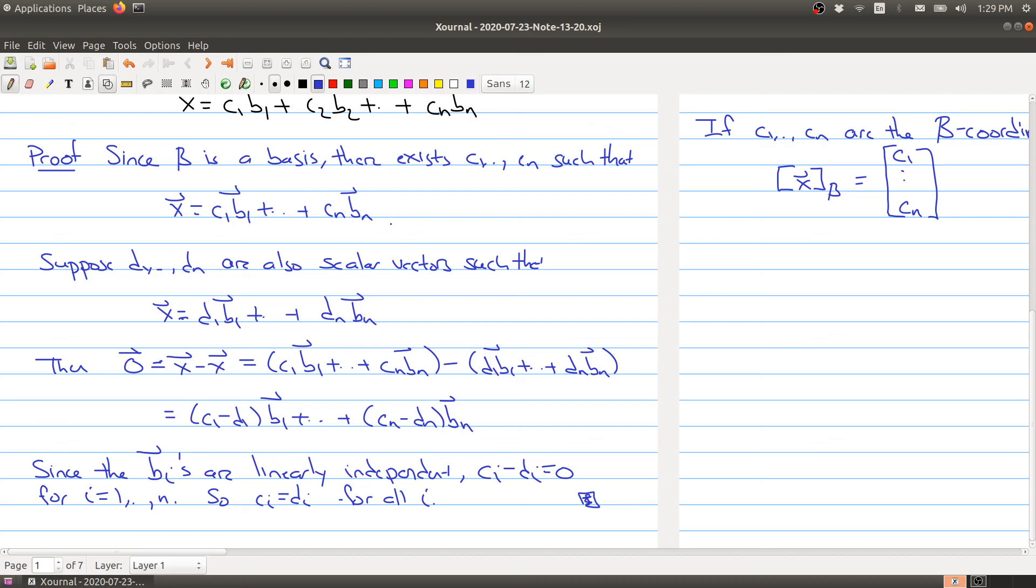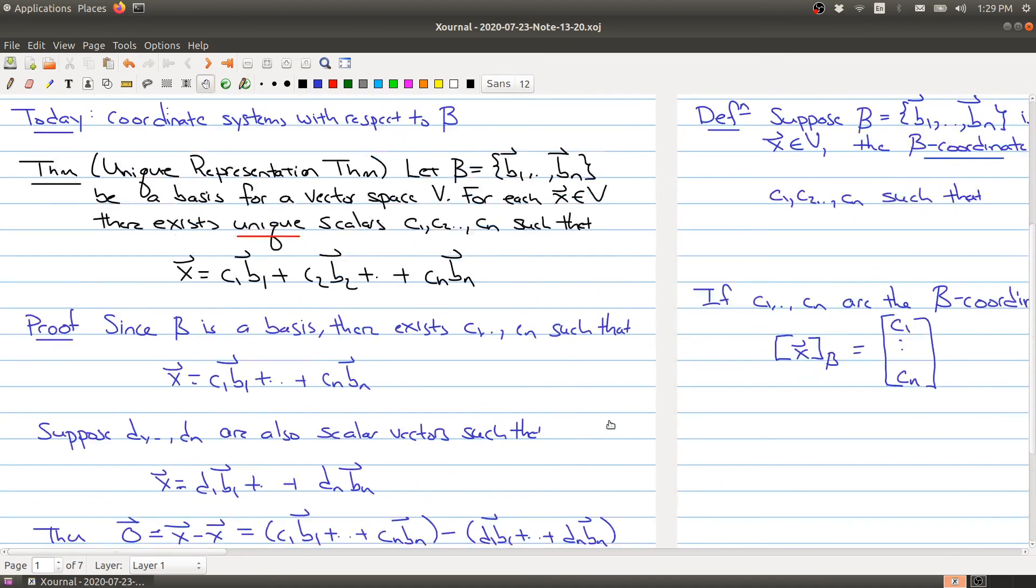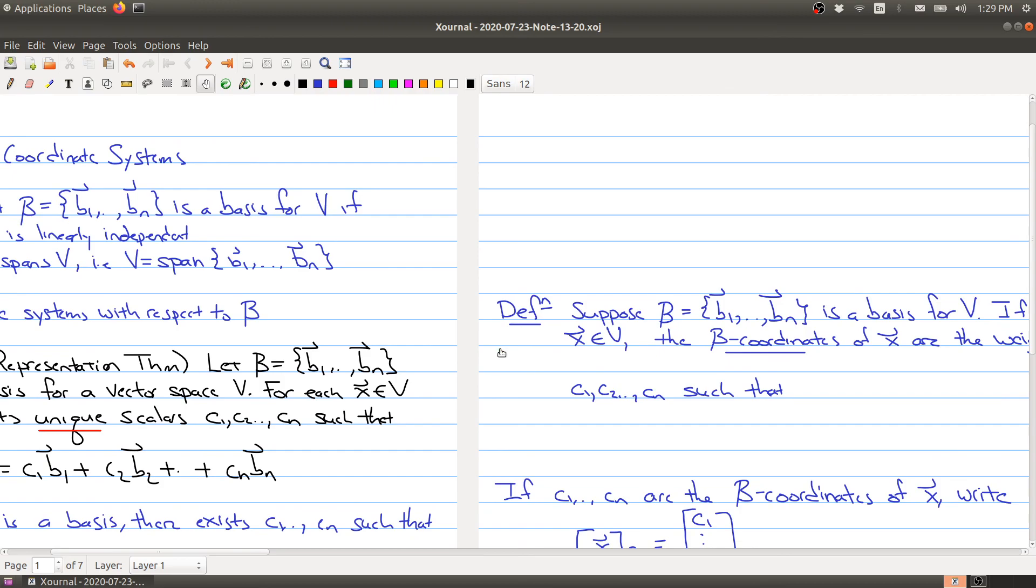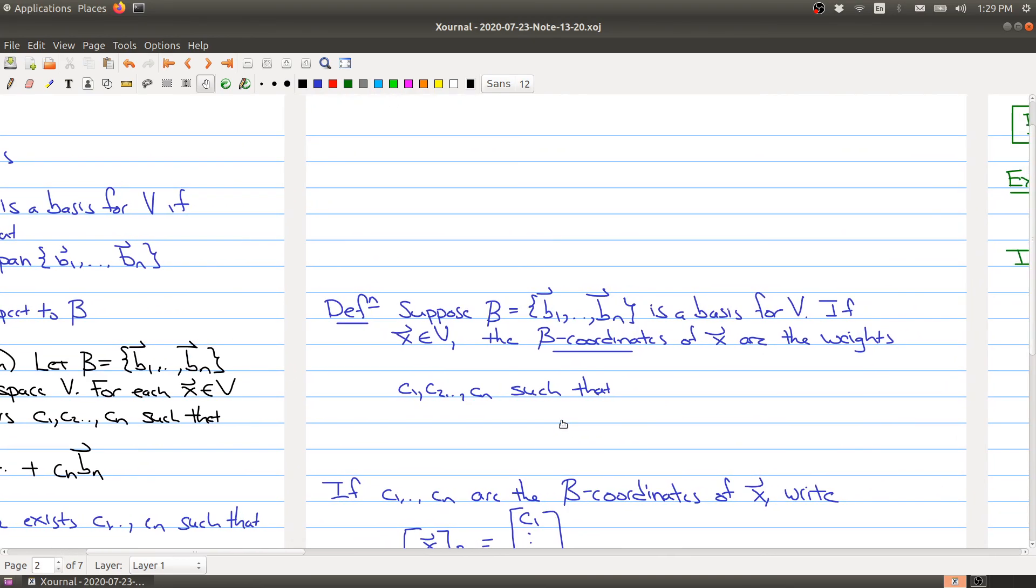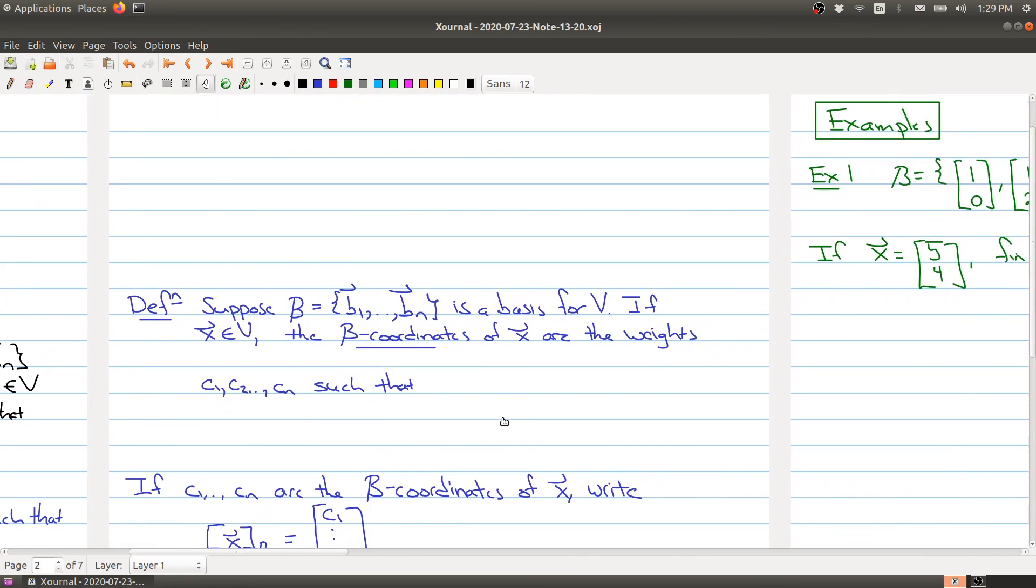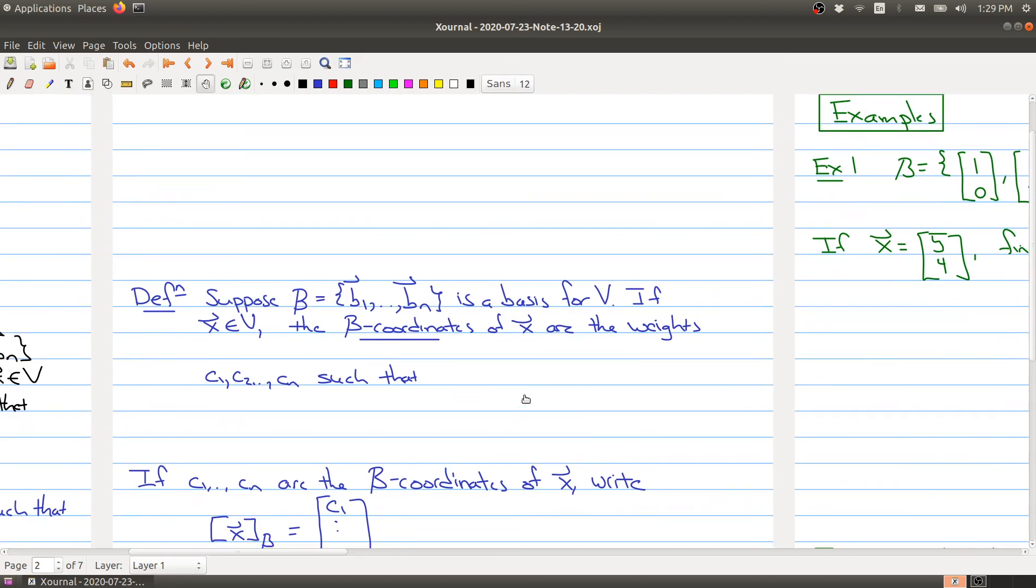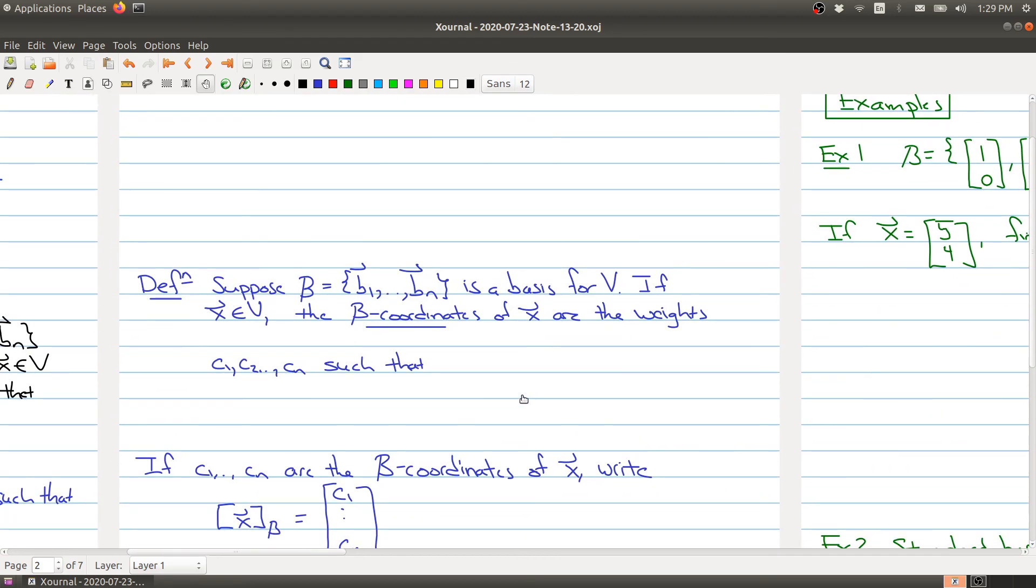And notice that this finishes the proof, because we started with one way of writing x, and we said, well, let's suppose that there's any other way of writing the x here. And what we're arguing is, hey, when you went to write it in a second way, you actually were forced to have written it in the first way. So this is a nice result, and where it becomes nice is now we can start taking advantage of the fact that we have some uniqueness. So mathematicians love it when you find something unique, and this is how we're going to use it.